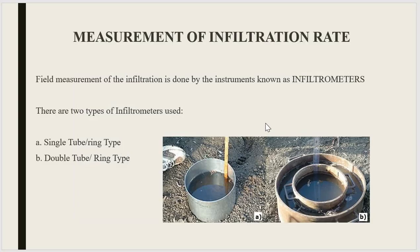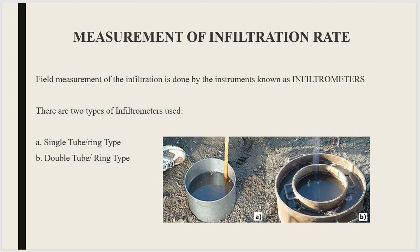Infiltration of water in the soil can be determined by a simple instrument called an infiltrometer. There are two types: one is the single tube or single ring type infiltrometer, and the second is the double tube or double ring type infiltrometer. We will be studying in detail the double tube ring type infiltrometer.